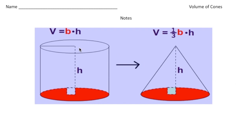If you understand how to find the volume of a cylinder, finding the volume of a cone is very similar. Take a look at this cylinder and this cone — they both have the same base, so notice the circle on the bottom is the same, and they both have the same height. To find the volume of the cylinder it's the area of the base times the height, but for the cone it's one-third times the base times the height.